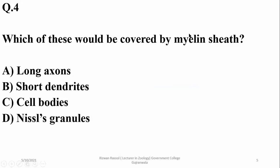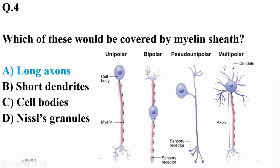Which of these would be covered by myelin sheath? As far as neuron structure is concerned, dendrites, cell bodies, and Nissl granules are present internally and are not covered by myelin sheath. However, long axons are usually covered by myelin sheath.